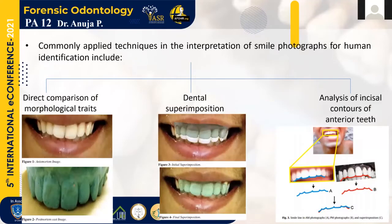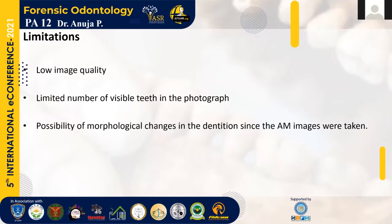The most commonly applied techniques in the interpretation of smile photographs for human identification include: first, direct comparison of morphological traits. In this method, the ante-mortem and post-mortem photographs are placed beside each other and observed for specific dental characteristic traits like the shape of crown morphology, the position of the teeth, the dental arches, crowding of the teeth if present, and absence or presence of missing teeth.